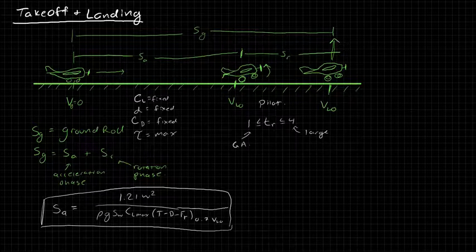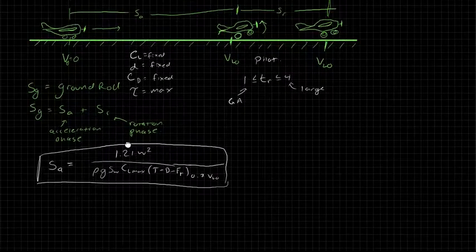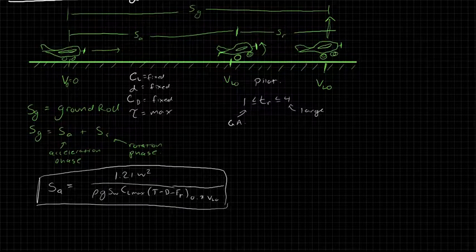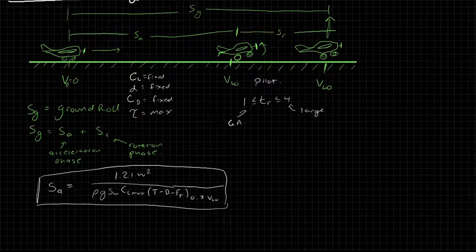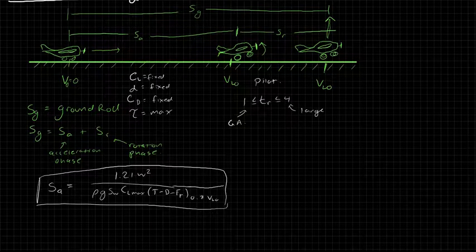So the rotation distance really depends on pilot input. And because of that, the way that we approximate it, and the other thing to note is that during the rotation phase, the velocity remains constant at the liftoff velocity.